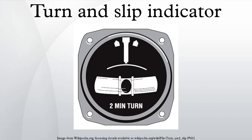In aviation, the turn and slip indicator and the turn coordinator variant are essentially two aircraft flight instruments in one device. One indicates the rate of turn, or the rate of change in the aircraft's heading. The other part indicates whether the aircraft is in coordinated flight, showing the slip or skid of the turn.